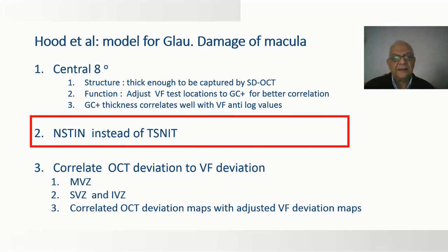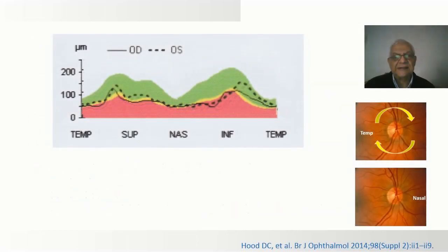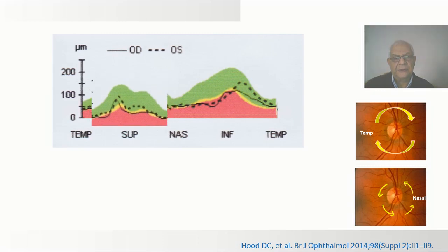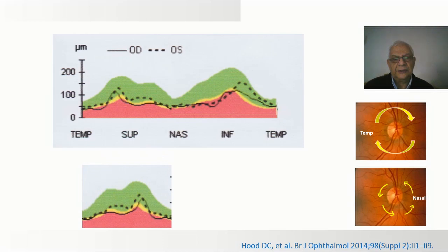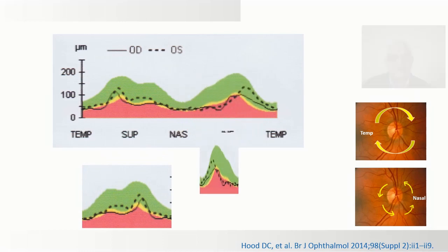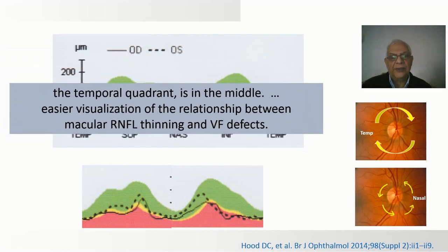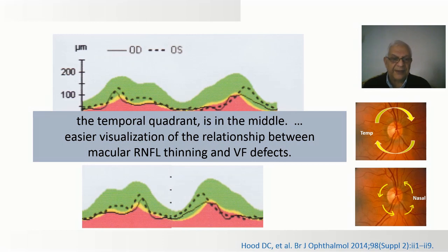Second, Hood's group suggested starting the OCT examination from the nasal side rather than the conventional temporal-to-superior-to-nasal-to-inferior-to-temporal sequence. By doing so, the temporal area ends up in the center of the printout, making it easier to visualize the relationship between macular thinning, nerve fiber layer thinning, and the visual field defect.